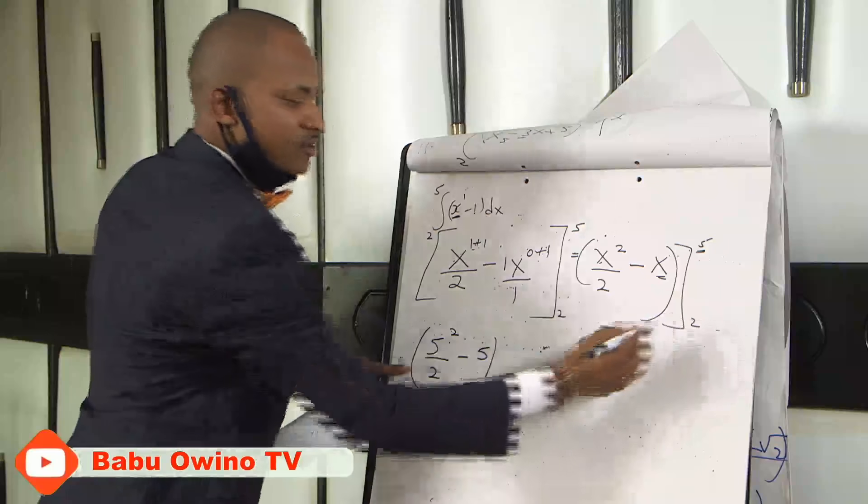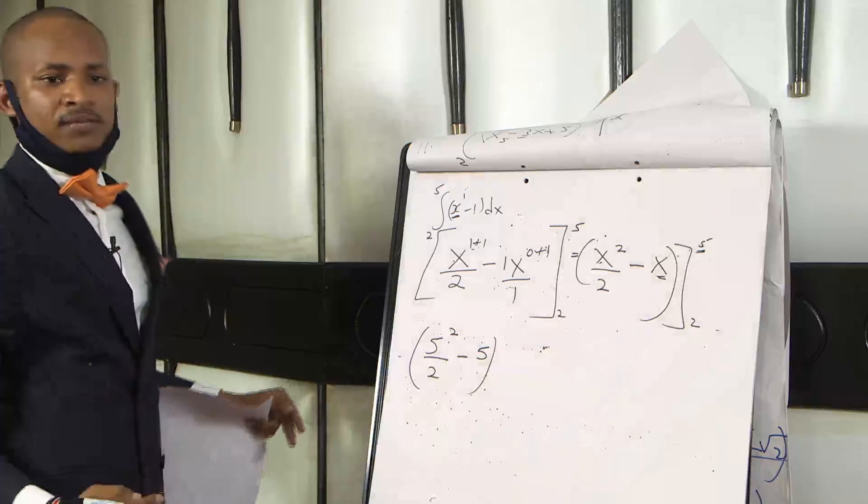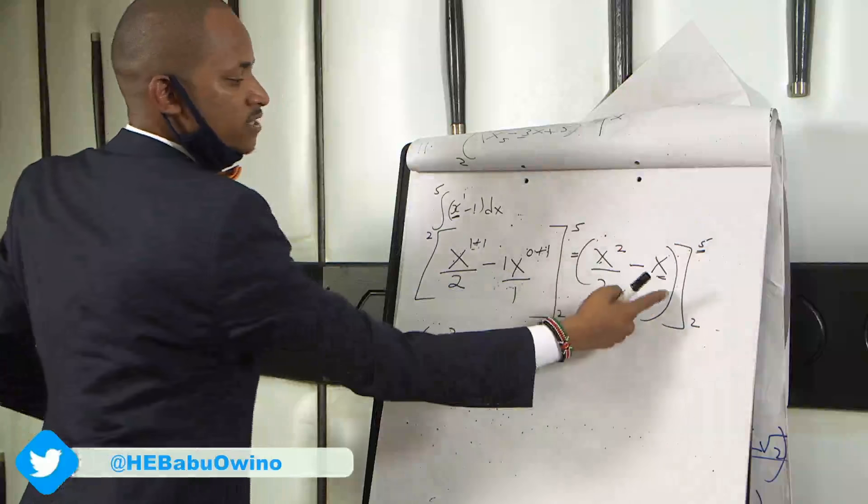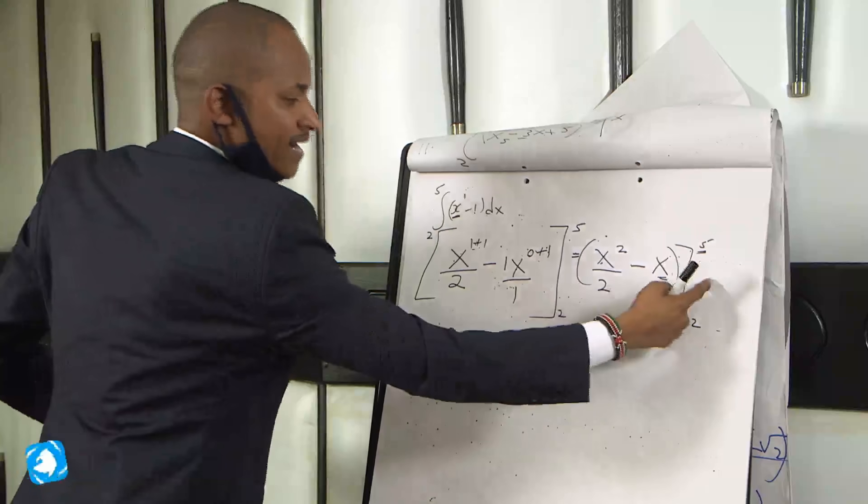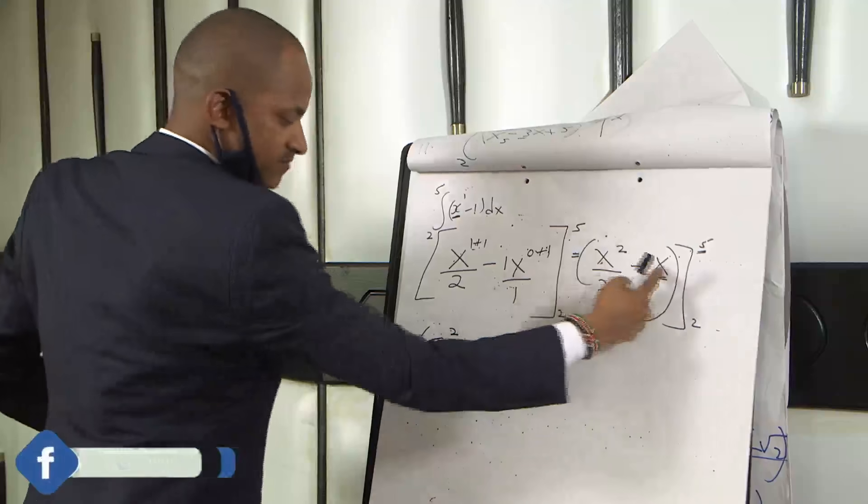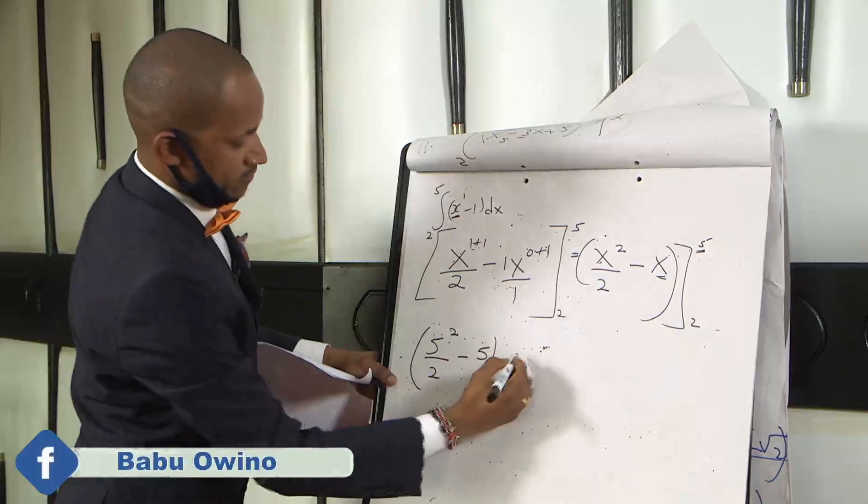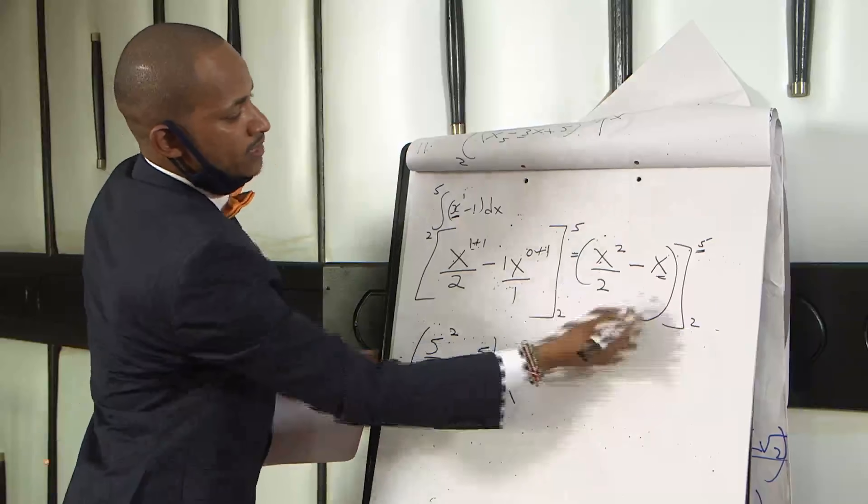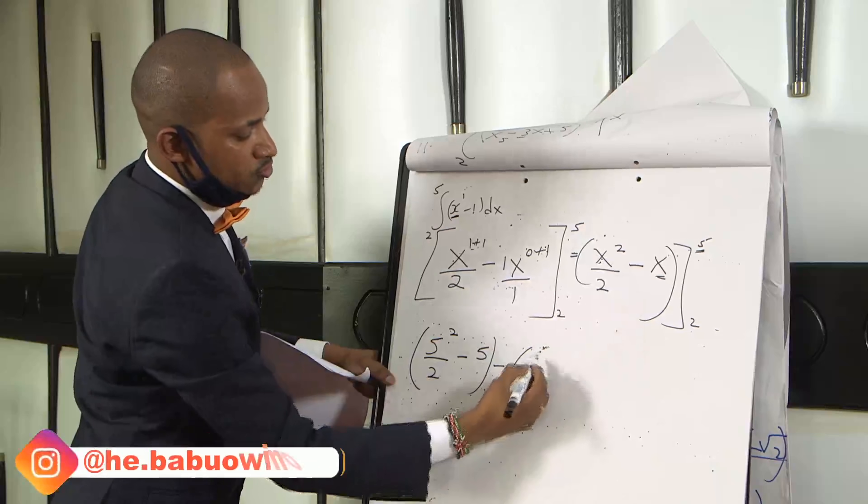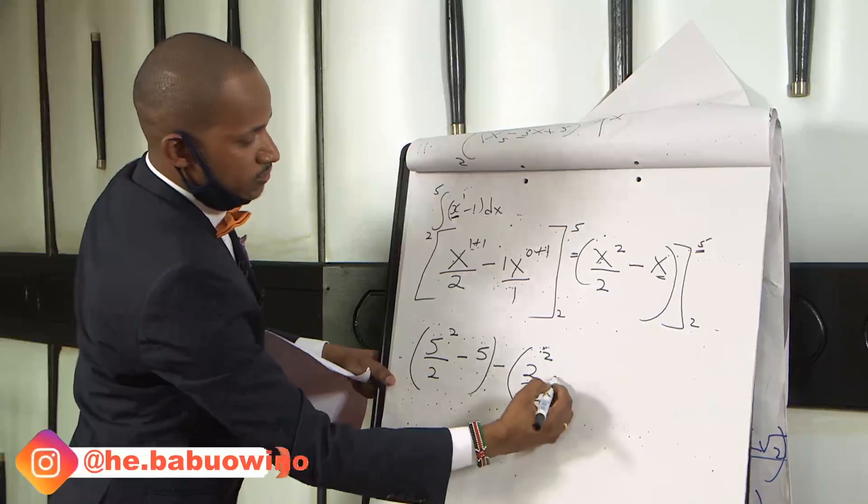Then this value that you get, you subtract the lower limit. We have upper limit and the lower limit. So the upper limit is 5 into these values, minus 2 into these values. You replace 2 here, so it becomes 2 squared divided by 2 minus 2.